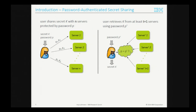That is basically what password authenticated secret sharing is about. Here, you don't only share a secret key K with N servers, but also protect it with a password P by sending password shares to those servers. When the user later wants to retrieve key K, they provide a password P prime, and the servers verify whether P prime matches P from setup. Only if that is the case can the user reconstruct a strong secret key.